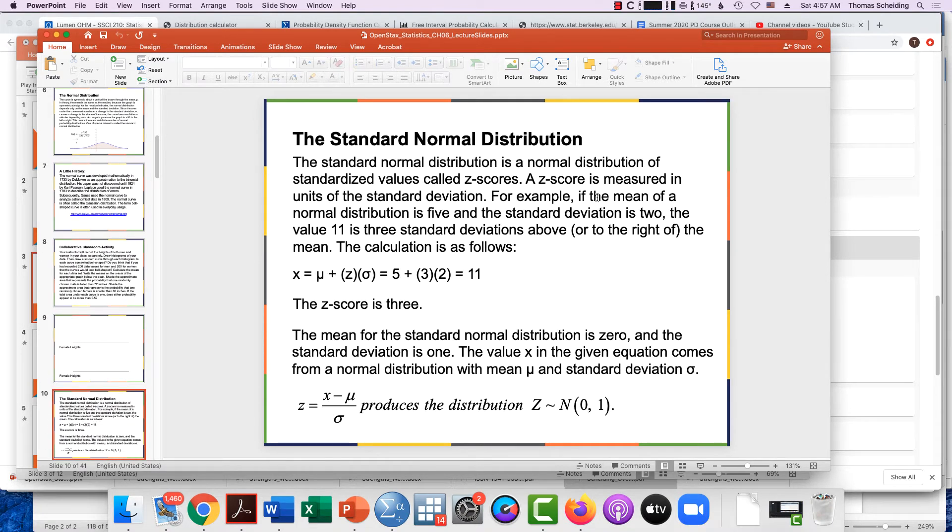So in terms of what do we do with this, one useful thing to be able to do would be to be able to calculate what are called Z-scores, and Z-scores are actually calculated using the standard deviation information.